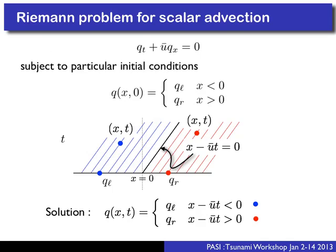The Riemann problem for scalar advection: our conservation law plus left and right data Q_L and Q_R. The solution propagates along characteristics, and the answer is: if x - u*t < 0, the solution is Q_left; if x - u*t > 0, the solution is Q_right. This is simply the upwind solution. Since U-bar is positive, stuff moves from left to right, so the solution at the interface is the left state.